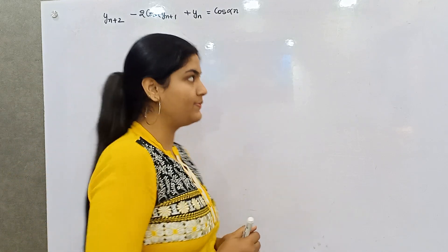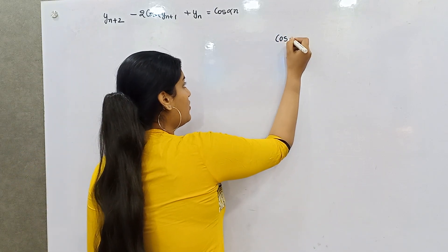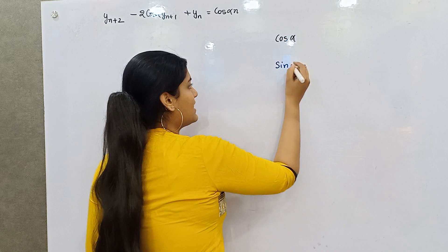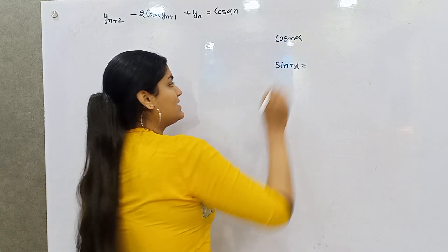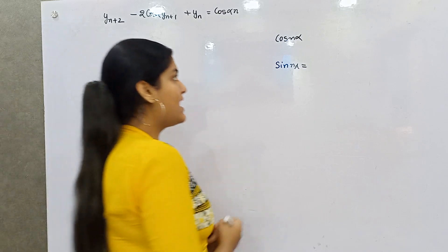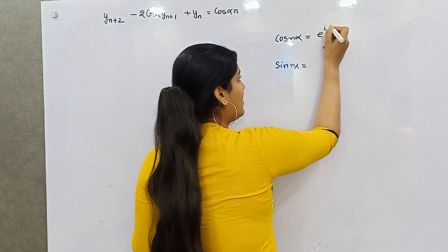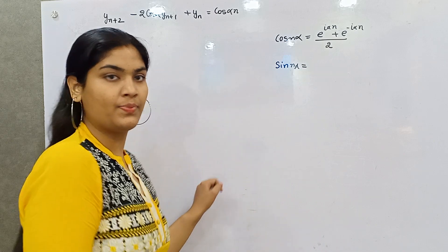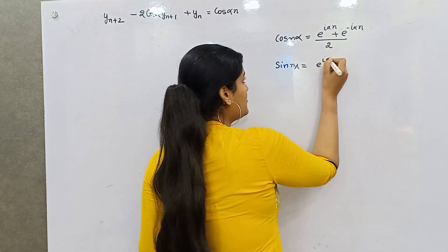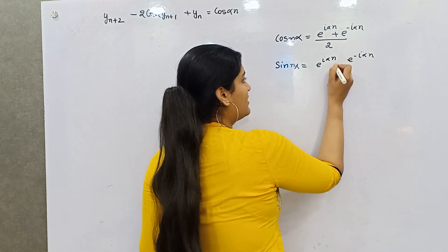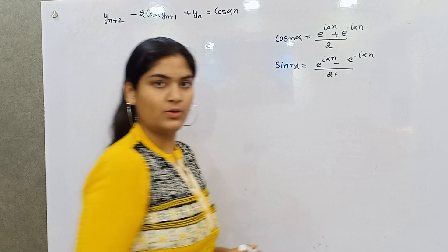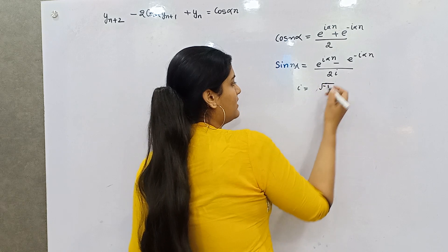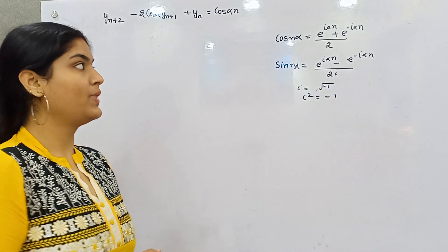Let me tell you what formulas we can use. On a general note, if you want to find out the value of cos(nα) and sin(nα), the formulas are: cos(nα) = (e^(iαn) + e^(-iαn)) / 2, and sin(nα) = (e^(iαn) - e^(-iαn)) / 2i. You know that i = √(-1) and i² = -1.